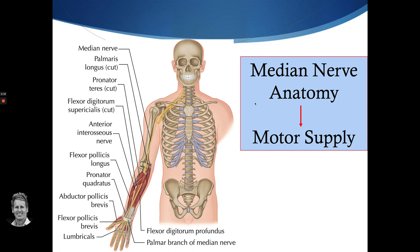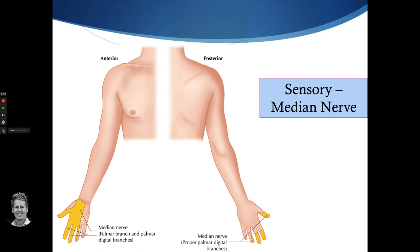The median nerve provides motor supply to many muscles in the forearm. Coming down through the carpal tunnel, it actually splits into the palmar digital branch and the recurrent branch.